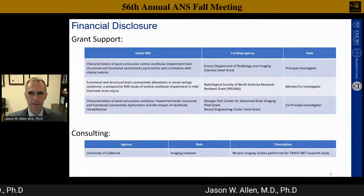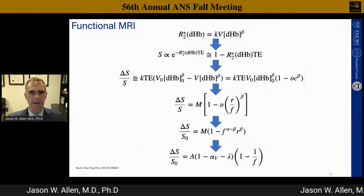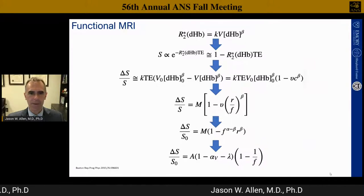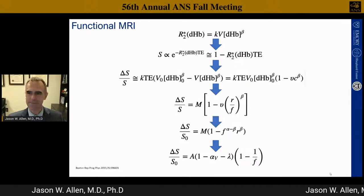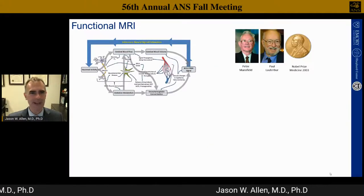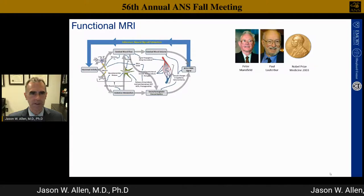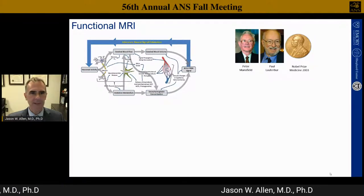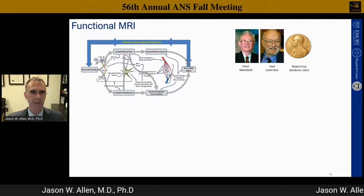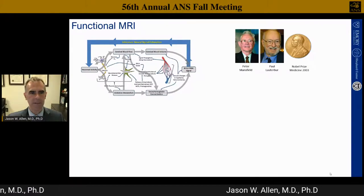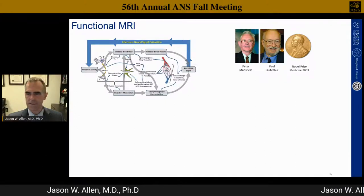Those are my disclosures—some grants and consulting not relevant to this talk. To begin, we need to understand functional MRI. Basically, functional MRI takes neuronal activity and translates it into what we actually image as cerebral blood flow. We're not seeing neural activity itself, but regional changes in cerebral blood flow reflecting changes in neuronal activity.